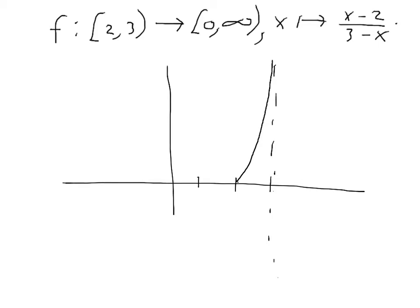It's 0 here, and it runs up to infinity there. The graph of the function makes it pretty clear that this function is surjective. Given any height, given any y value, you can certainly find an x value which takes that height. So our conjecture should be that this is surjective, and we shouldn't have any trouble proving that.